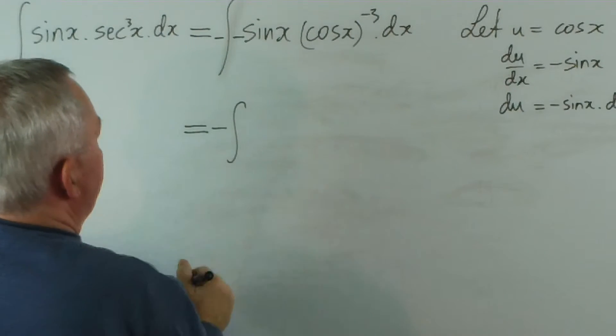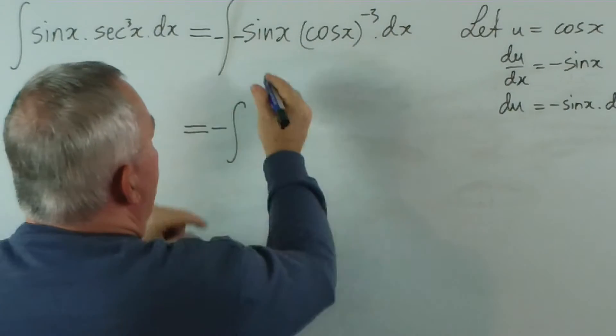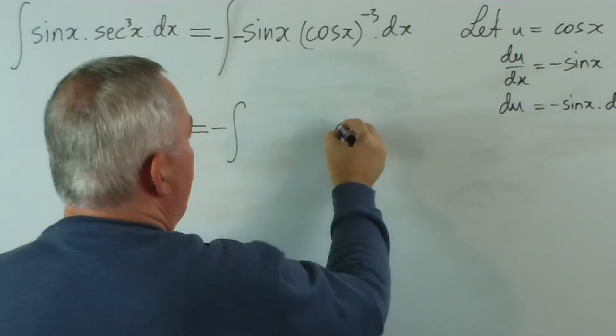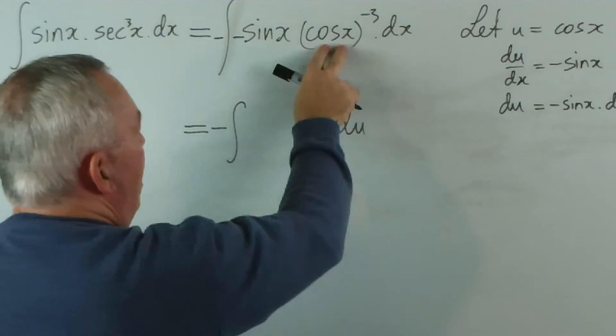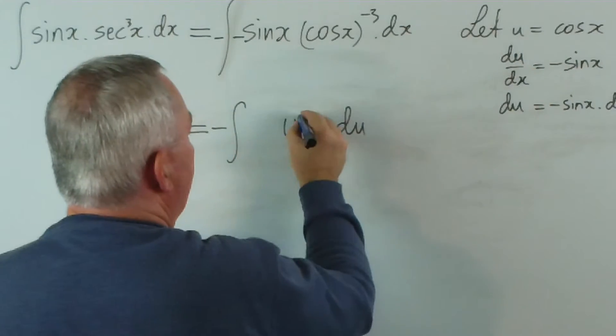So I'm going to put a minus here and a minus outside. So we'll get minus the integral. Now the minus sin x dx, minus sin x dx would be replaced with du. And the cos x to the negative 3, cos x is worth u, it would be u to the negative 3. Which is quite a straightforward integral.